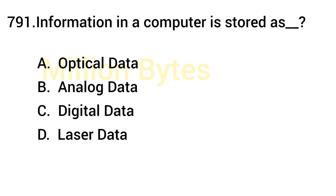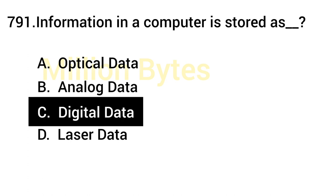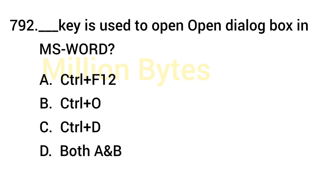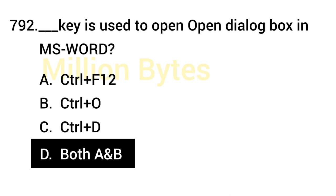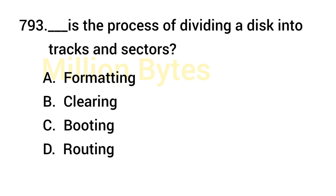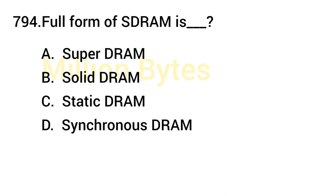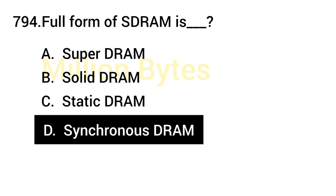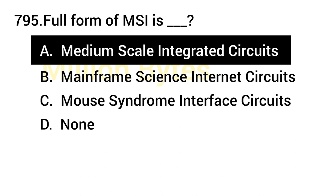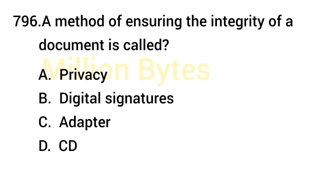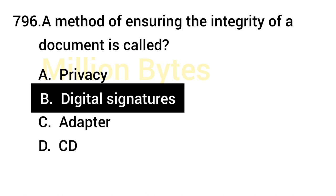Information in a computer is stored as Digital Data. The key used to open a file in MS Office — the correct answer is both Ctrl+F12 and Ctrl+O. The process of dividing a disk into tracks and sectors is called Formatting. SDRAM stands for Synchronous Dynamic RAM. MSI stands for Medium Scale Integrated Circuits.